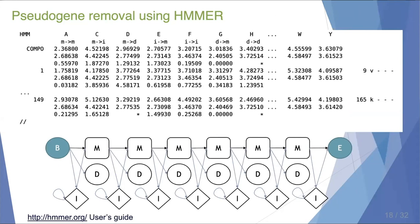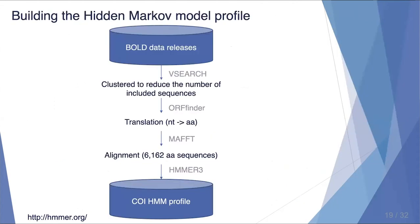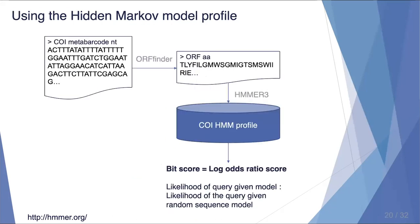This is encoded into the profile, and the probabilities are stored as negative natural logarithms. I built a custom CO1 barcode HMM profile by retrieving 2.4 million sequences from the BOLD data releases. I reduced the dataset by clustering at 80% sequence similarity to about 6,000 reference sequences. These sequences were translated into open reading frames, the amino acid sequences were aligned, and then used with HMMER to create the profile. I then take a FASTA file of CO1 metabarcode sequences, translate them into open reading frames, and compare each amino acid ORF with the profile in HMMER, retrieving the bit score.